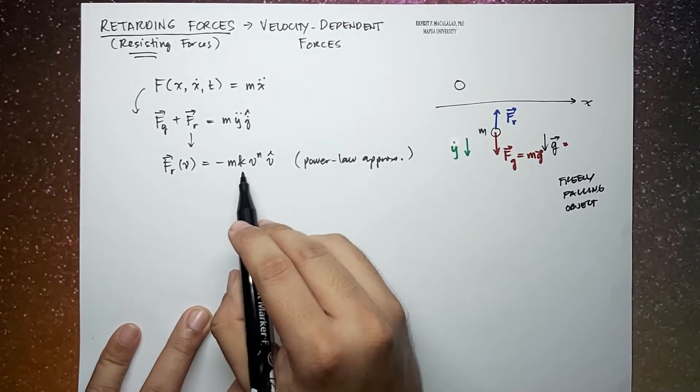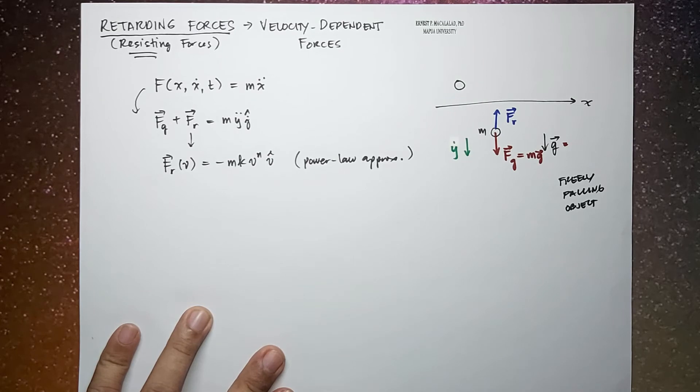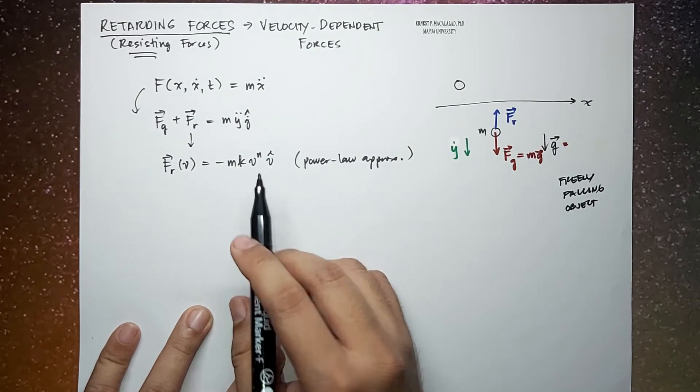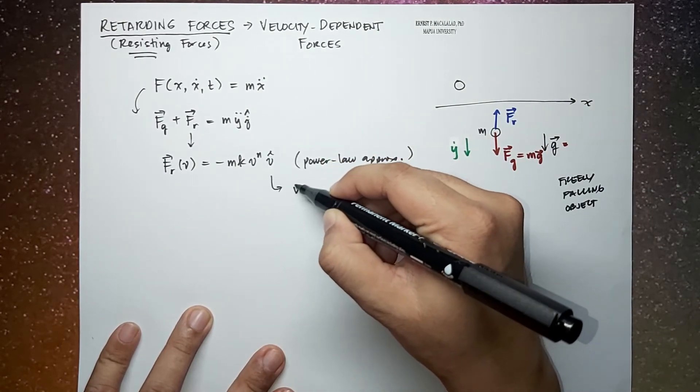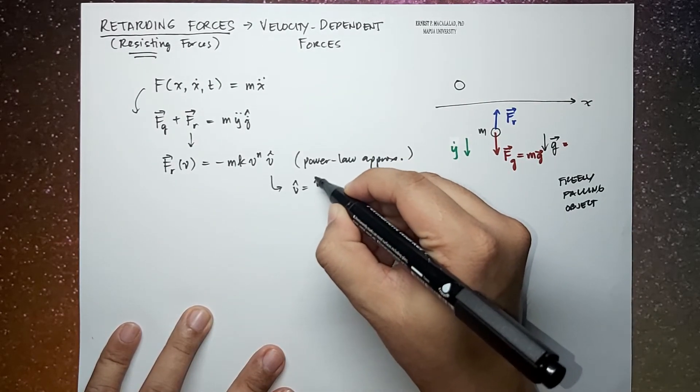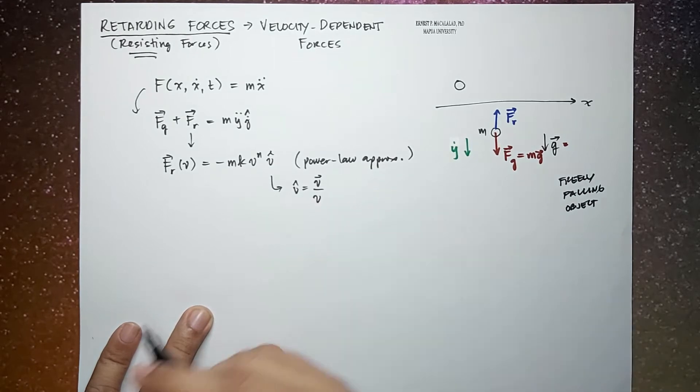So here k is a positive constant which indicates the strength of the retarding force. m is the mass of the object. v hat is the direction or the unit vector along the direction of the velocity. So by definition, this is equal to the velocity vector divided by the speed.